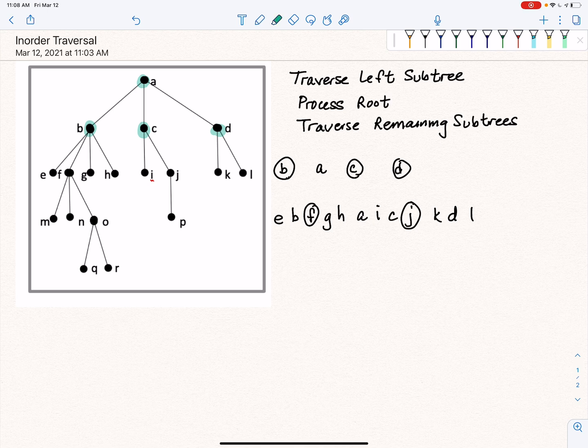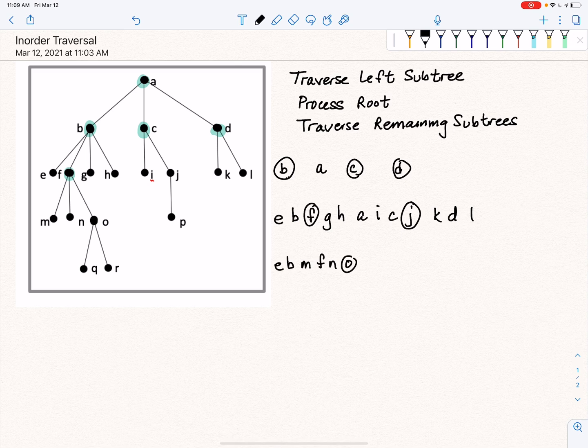So now we go to the subtree rooted at F. So everything before F gets written. So F has an M before it, and that's just a node, so we don't have to worry about that. Then we process the root, which is F. Then we traverse to the next subtree, which is rooted at N, but that's just a node. And then we go to the tree rooted at O, but that is a tree, so I'm going to put a circle around that. Now that's everything that has to do with F.